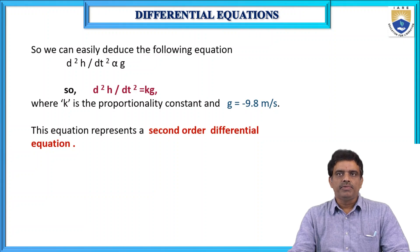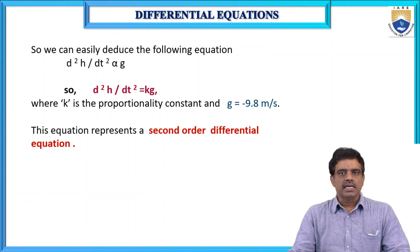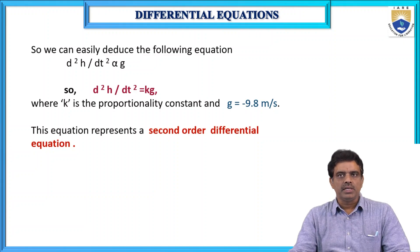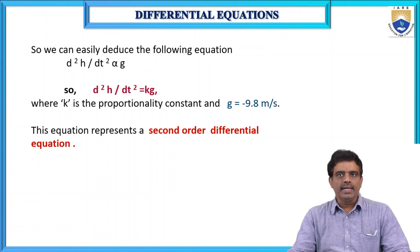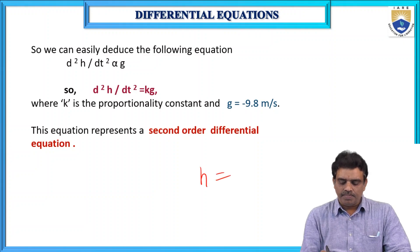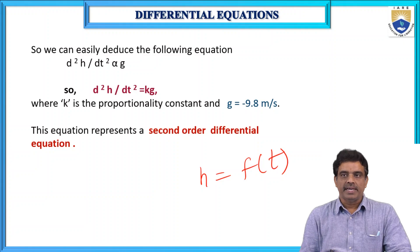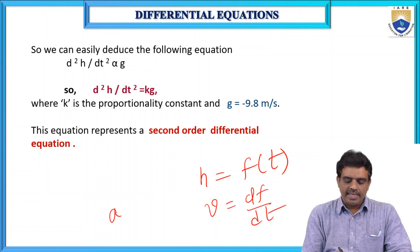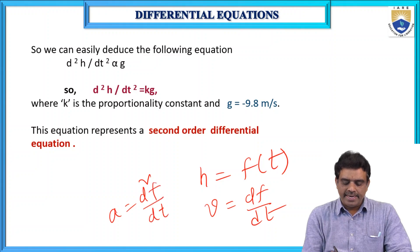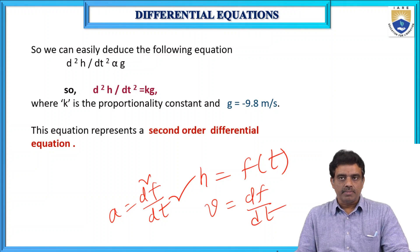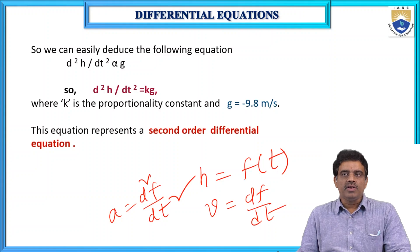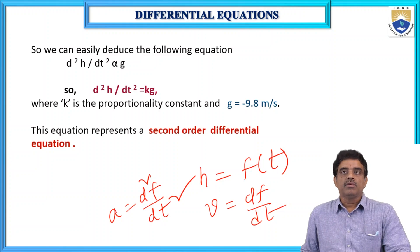What we have done here is the physical property or physical nature of the object is converted into a mathematical model called the differential equation, which clearly represents a second order differential equation. If you solve this equation, you will get the solution h as a function of t. h means displacement. If you know the displacement, you can find the velocity by finding dh/dt, and find the acceleration by finding d²h/dt². So, if you know the change in displacement, that is velocity, you can find the acceleration also at any time.